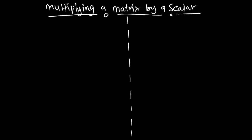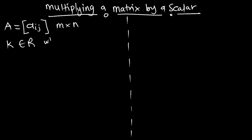How do we multiply a matrix by a scalar? So first, let's assume we have a matrix A in the form. We are representing our matrix in the form Aij. This is our matrix, and the order of this matrix is M by N. And let's have our scalar as K, which is a real number.